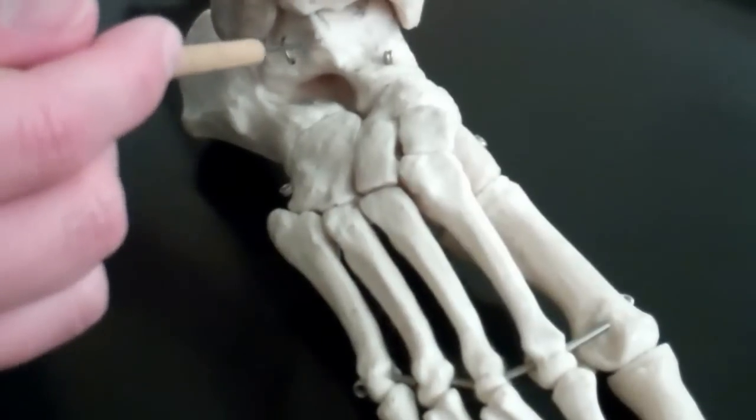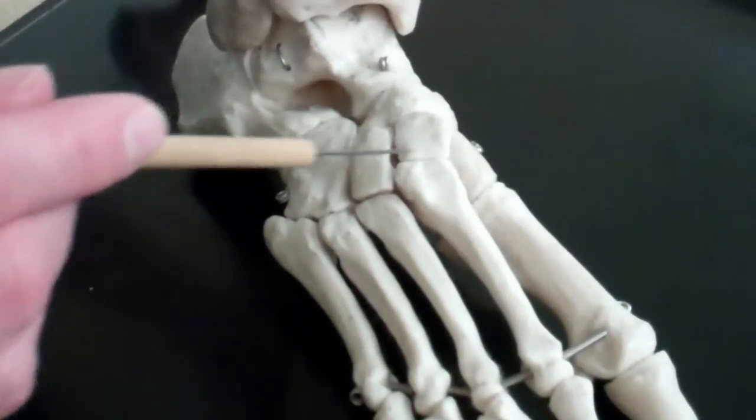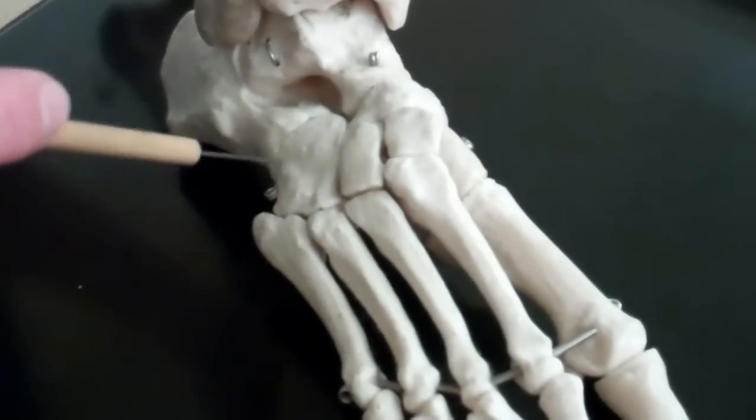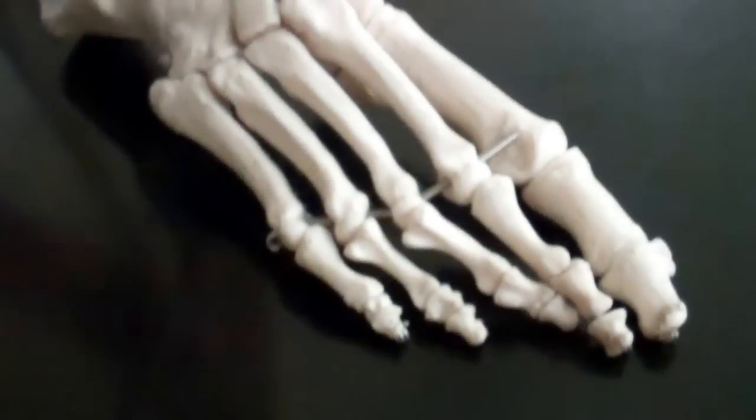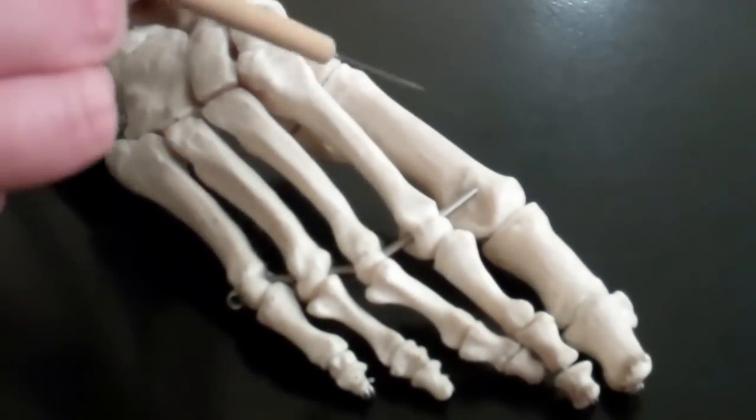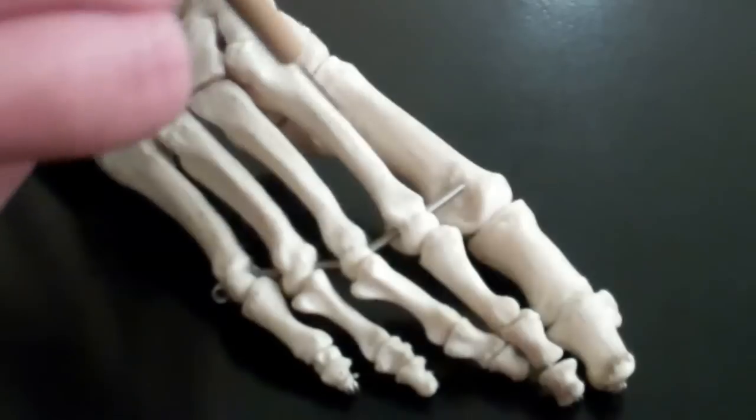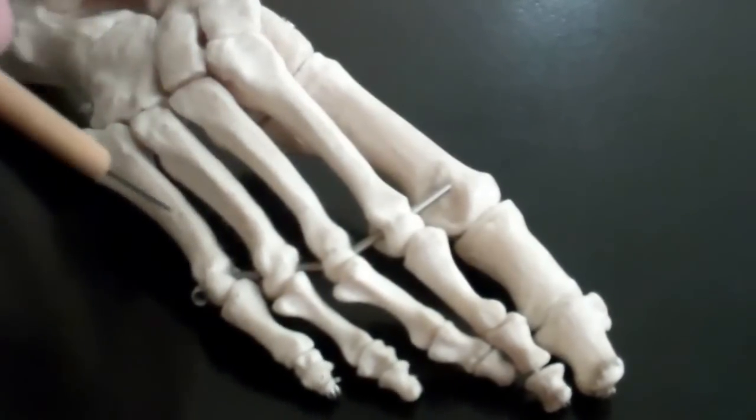The other tarsals, you need to know just as tarsals. They have names, but luckily we don't make you know what they are. The rest of the foot is made up of the metatarsals. There are five of them in order: one, two, three, four, five.